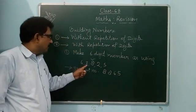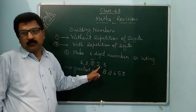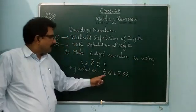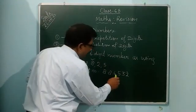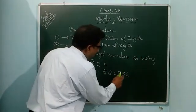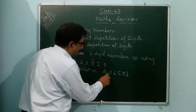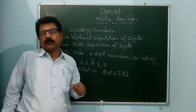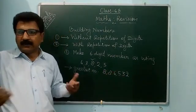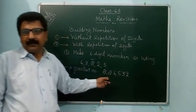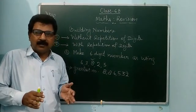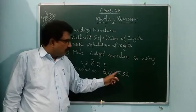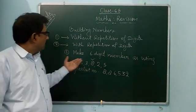After that just smaller, 5. After that just smaller, 3. And smallest 2. Count this: 1, 2, 3, 4, 5, 6 — now this is the 6-digit greatest number. It is 8,86,532. If you are asked to write the number in words also, you can write 8,86,532 in words. In this way you can make the greatest 6-digit number.